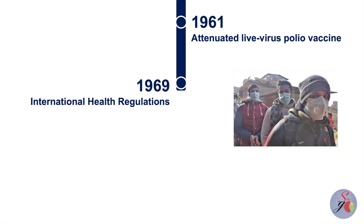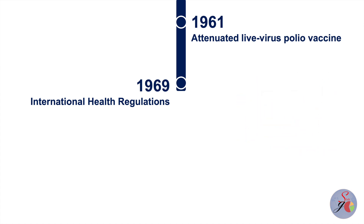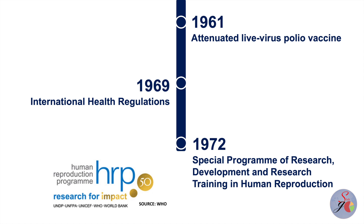The World Health Assembly established the first international health regulations in 1969, representing an agreement between WHO member states to work together to prevent and respond to acute public health risks that have the potential to cross borders and threaten people worldwide. The Special Programme of Research, Development and Research Training in Human Reproduction was created at WHO in 1972 — the sole body within the UN system with a global mandate to carry out research into sexual and reproductive health and rights.